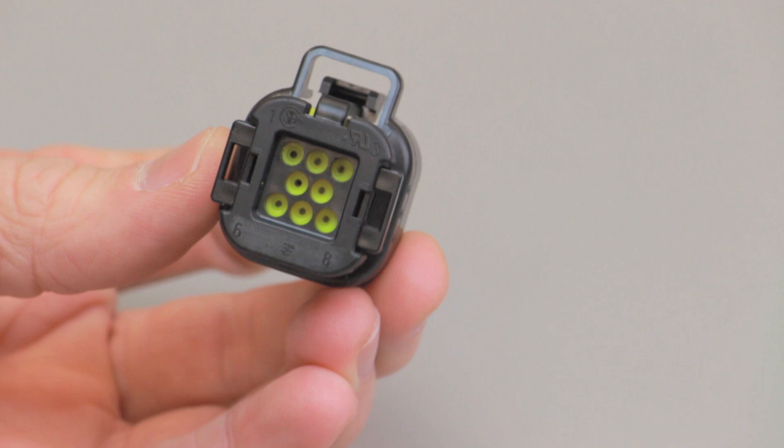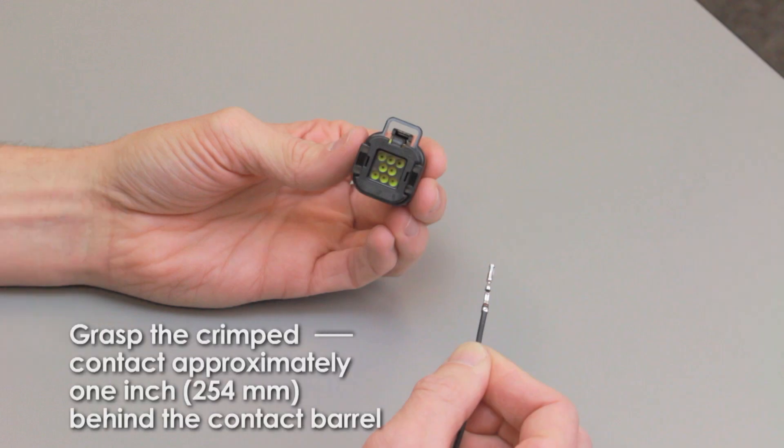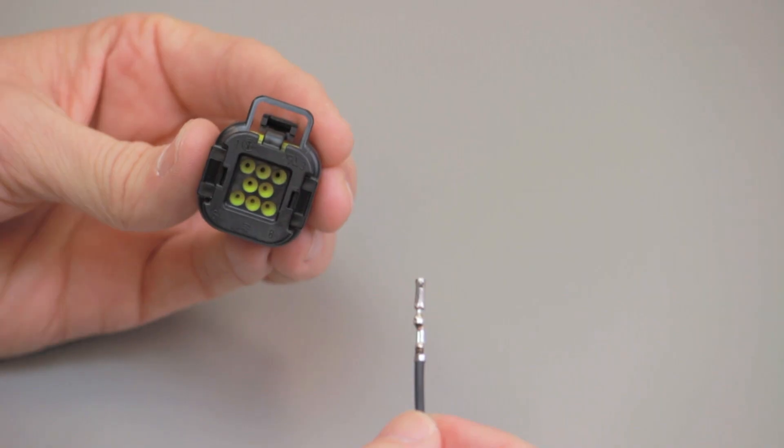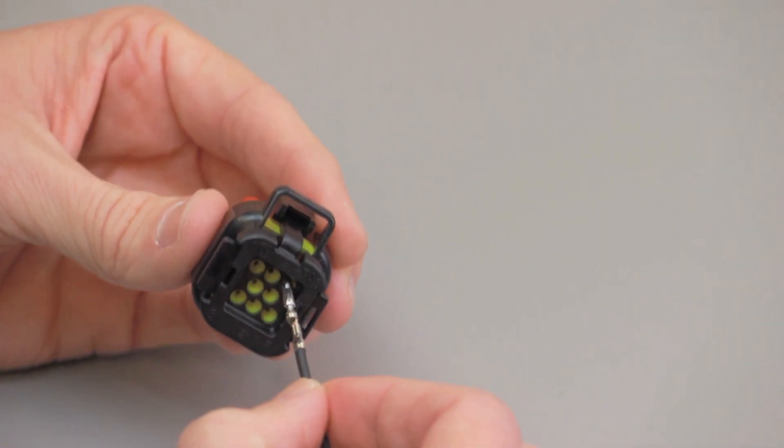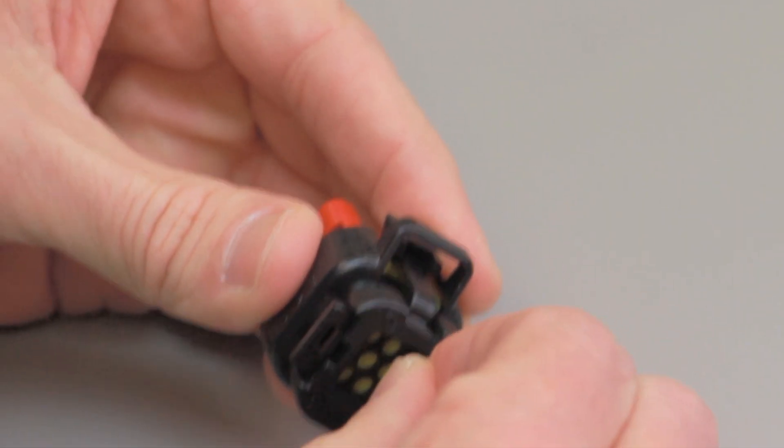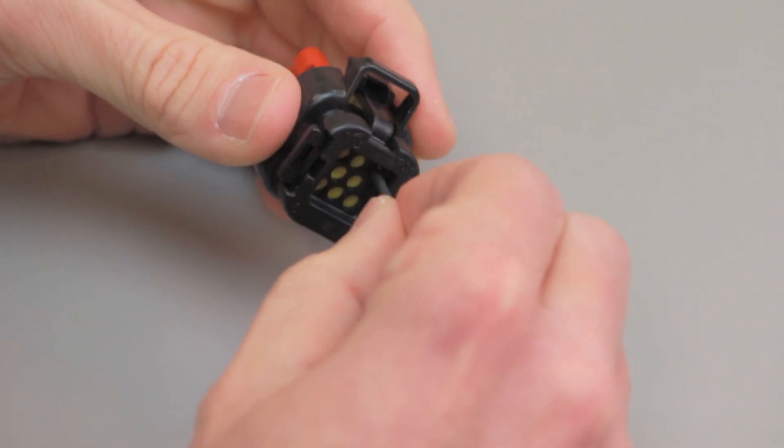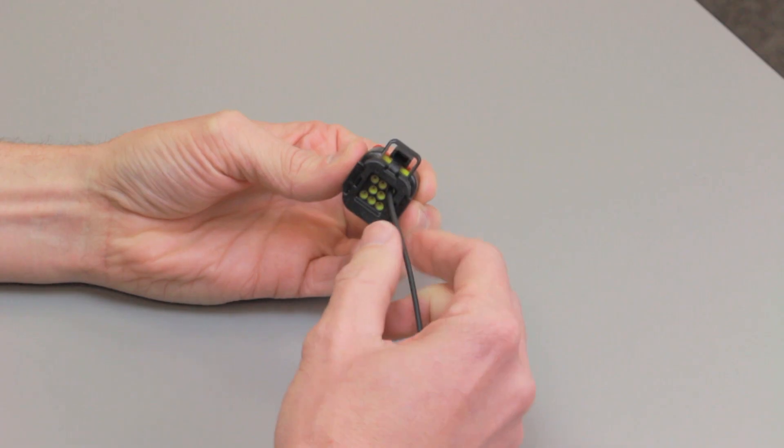Empty cavities will remain sealed. Grasp the crimped contact approximately one inch behind the contact barrel. Insert the contact into the connector cavity until you hear and feel a click. A slight tug will verify the contact is locked in place.